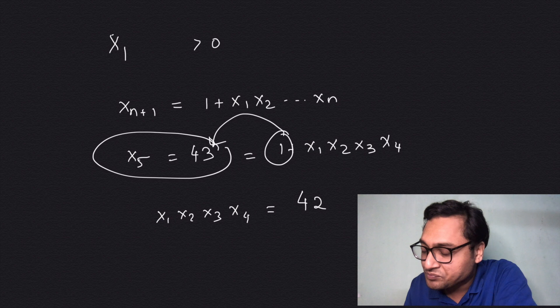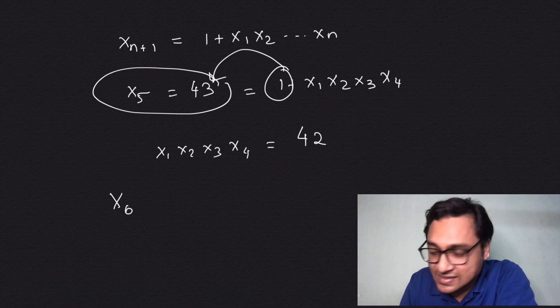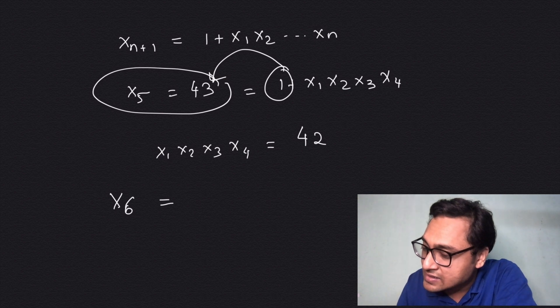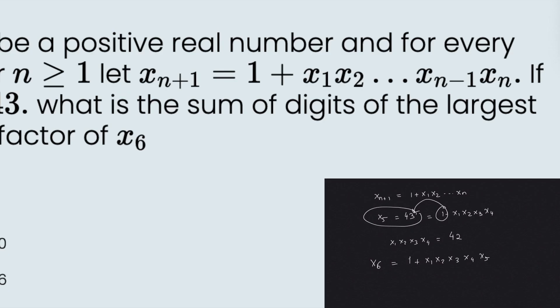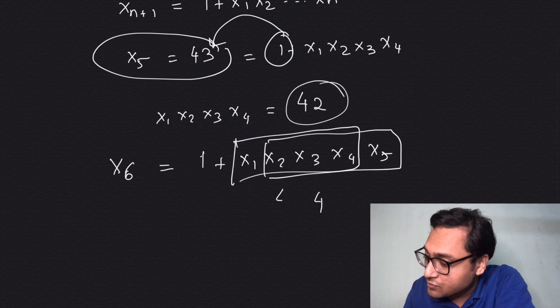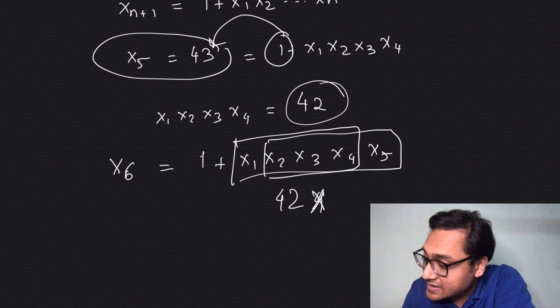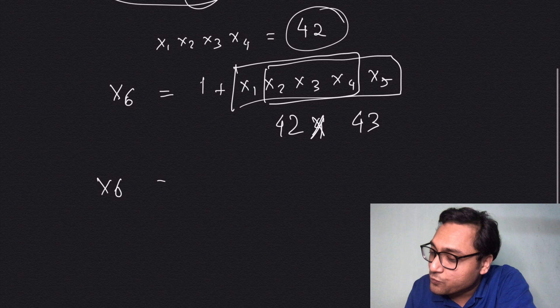Now I want to find x6. So x6 is 1 plus x1·x2·x3·x4·x5—that's the inductive step given here. I know x1·x2·x3·x4 is 42, and I know that x5 itself is 43. So x6 is 1 plus 42 times 43.